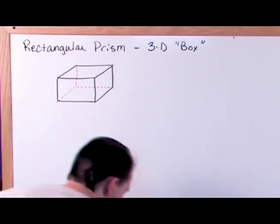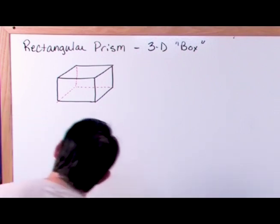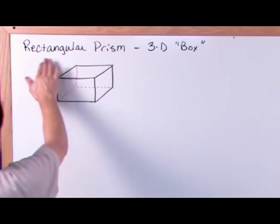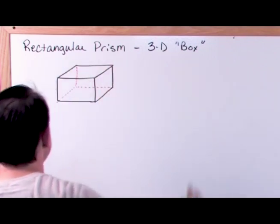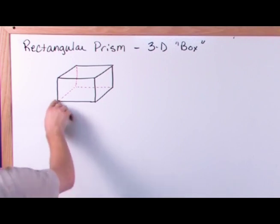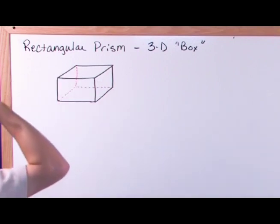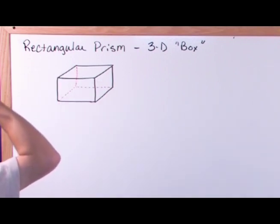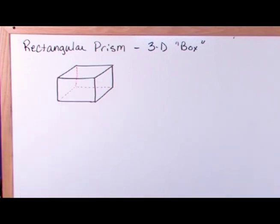It's a box, that's all it is. Geometry's full of these fancy words — rectangular prism, what does that mean? Well, here's a rectangular prism, it's a box. You have tons of them in your house. I'm probably looking at some right now.